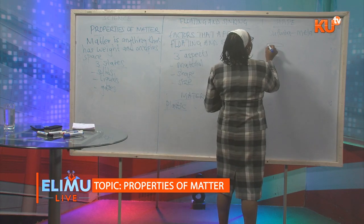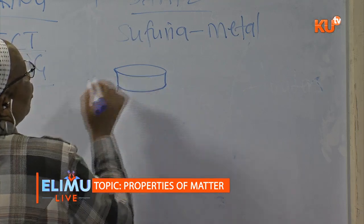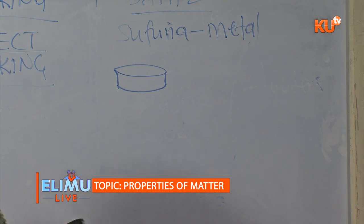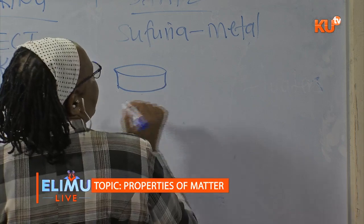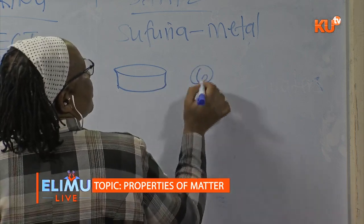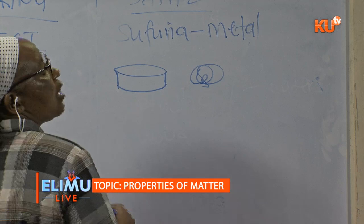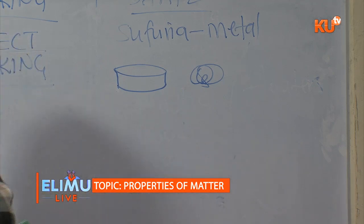The sufuria has a hollow part. This hollow part traps a lot of air, and the surface area will also make it float. If you crush the same sufuria and make it into a ball, then put it in water, it will sink.